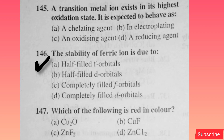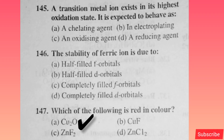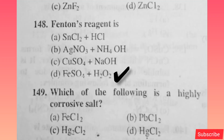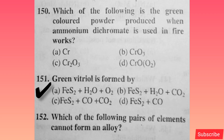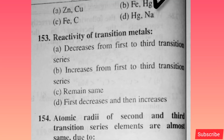The stability of ferric ion is due to — option B is correct. Which of the following is red in color? Option A is correct. Fenton's reagent is — option D is correct. Which of the following is a highly cohesive salt? Option D is correct. Which of the following is a green-colored powder produced when ammonium dichromate is used in fireworks? Option C is correct. Green vitriol is formed by — option A is correct. Which of the following pairs of elements cannot form an alloy? Option B is correct.